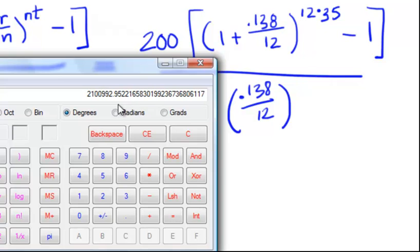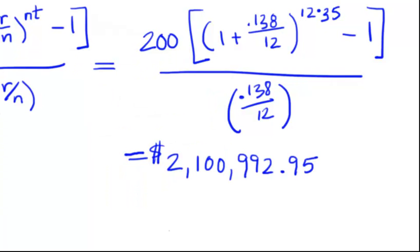So we're going to divide it by this, and you'll see that our value comes out... now this is money, so I'm going to round this off to two decimal places, and we come up with a value of $2,100,992.95.